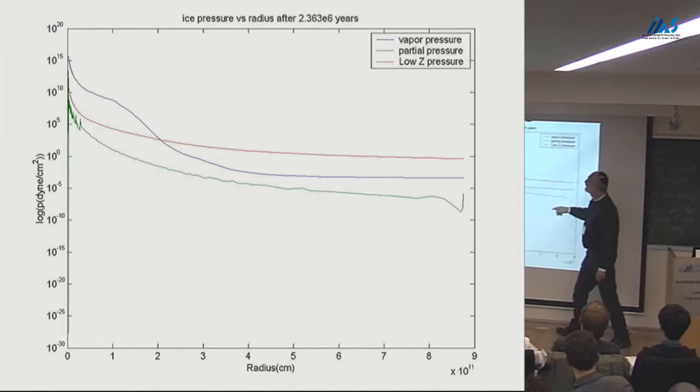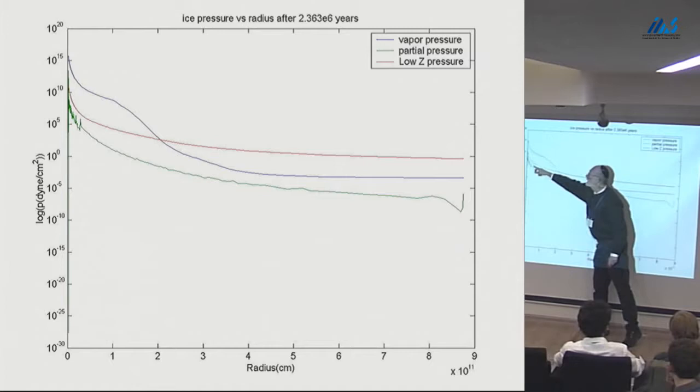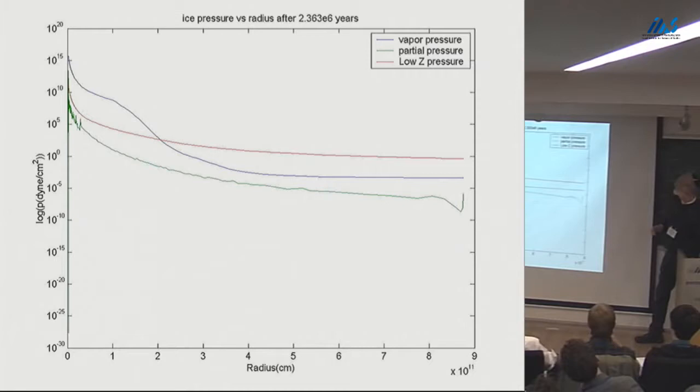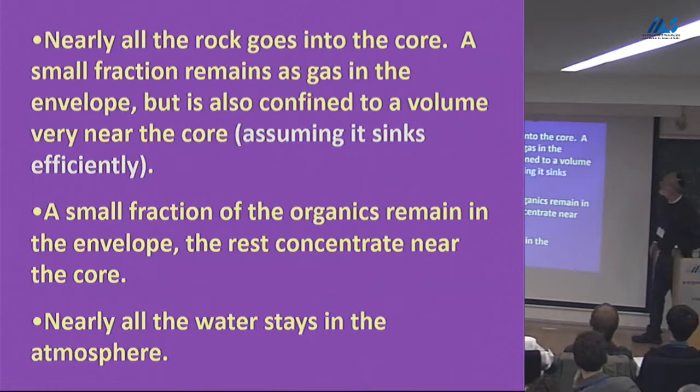Here's the same thing for ice. Here's the hydrogen-helium; here is the ice that you put in; and this is the vapor pressure of water. What this is telling you is that all the ice that you put in as vapor can stay there — no problem. So the ice stays in the envelope. We also looked at some sort of organics — I don't know what the organics are. I just looked up the heaviest organic in the CRC tables.